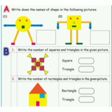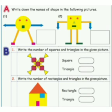Okay, my dear students. Today your practice questions are given here. A question: write down the names of shape in the following pictures. B, first question: write the number of squares and triangles in the given picture. Second question: write the number of rectangle and triangles in the given picture. Thank you, dears.